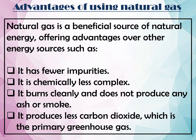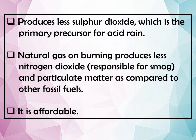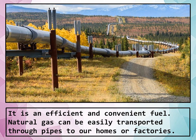Natural gas produces less carbon dioxide, which is the primary greenhouse gas. It also produces less sulfur dioxide, which is the primary precursor for acid rain, and less nitrogen dioxide, which is responsible for smog, and generates less particulate matter compared to other fossil fuels like coal and petroleum. Lastly, natural gas is also affordable, inexpensive and readily available. It is an efficient and convenient fuel that can be easily transported through pipes to our homes or factories.